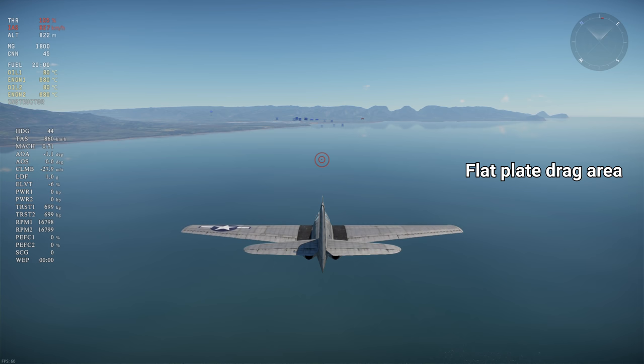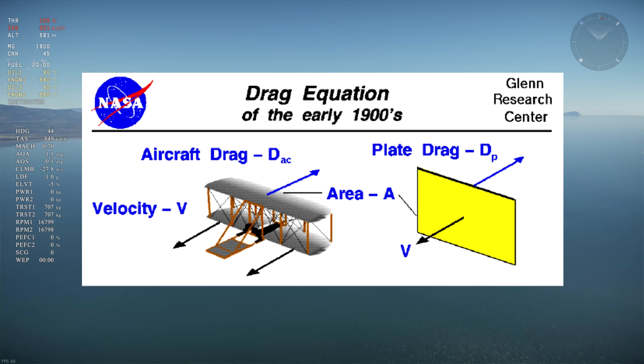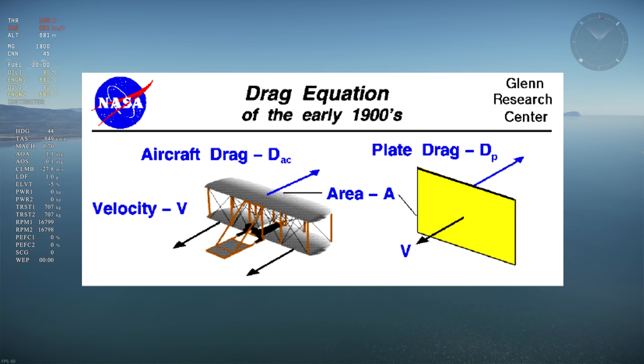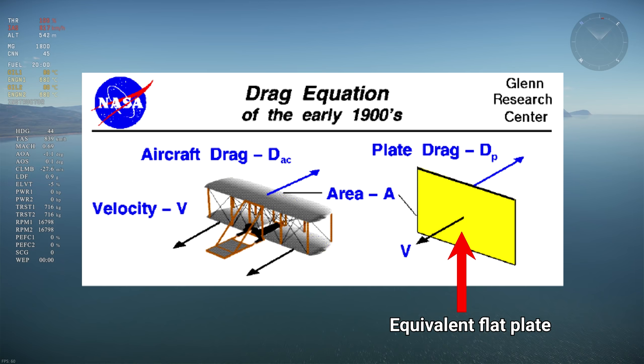Before we get into the graphs, I'll explain what flat plate drag area is since that's the metric used to compare drag between an aircraft. The flat plate drag area of an aircraft is the amount of area that will produce the same amount of drag as the aircraft going at the same speed. It's equal to the zero lift drag coefficient times the wing area.